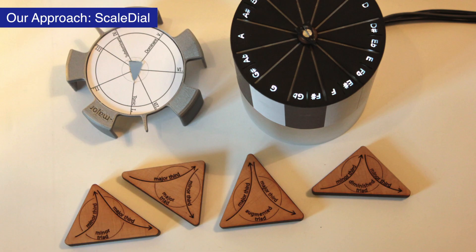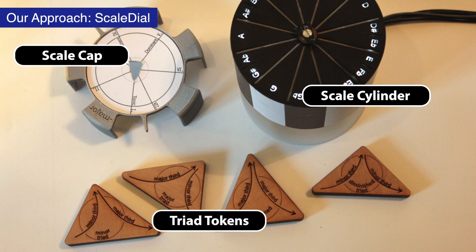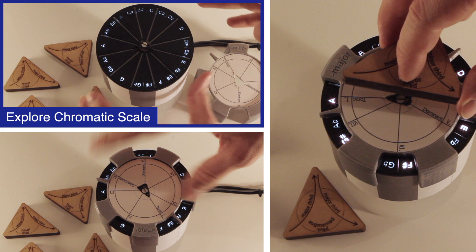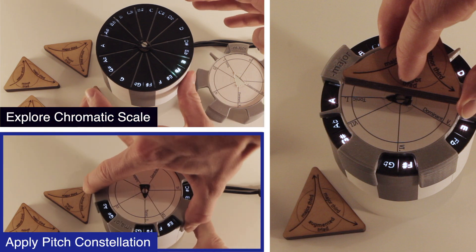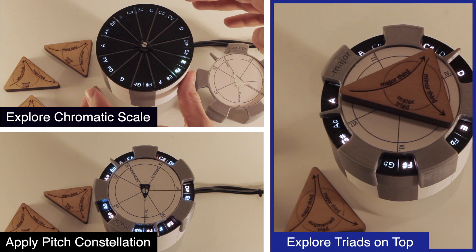Therefore, we introduce a scale cylinder, a scale cap, and four trite tokens to support the exploration of the chromatic scale, an understanding of pitch constellations, and the construction of trites.